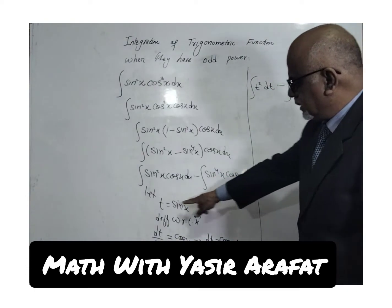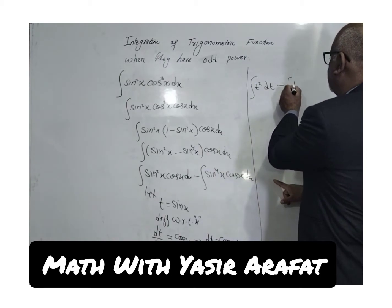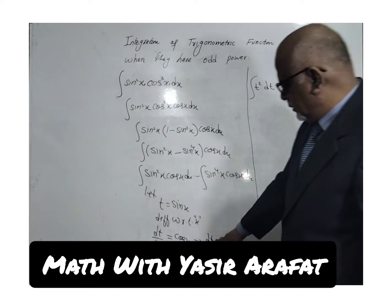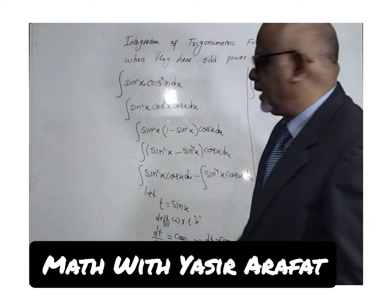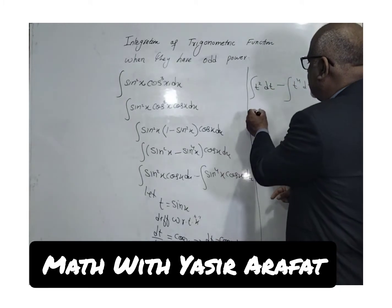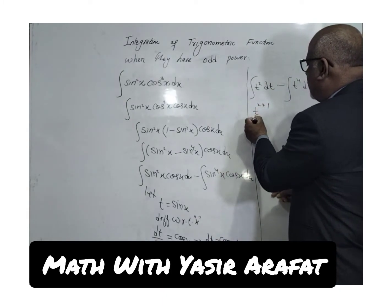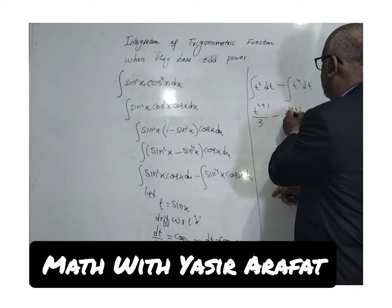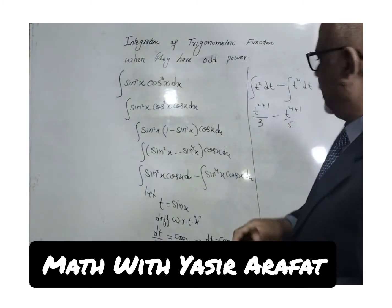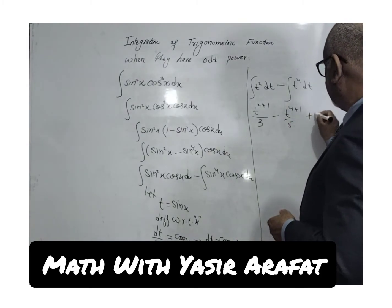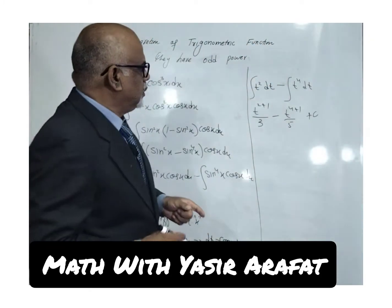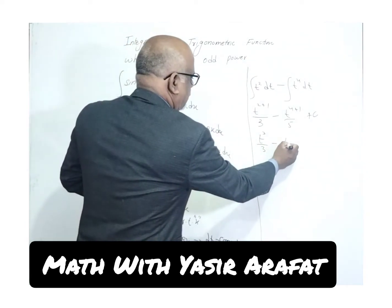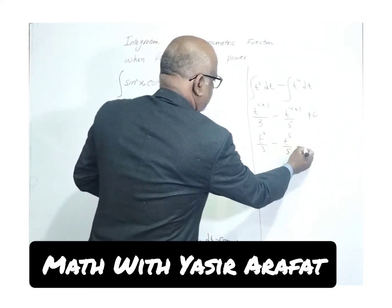Integrating with respect to t: for t², we add 1 to the power to get t³/3. For t⁴, we get t⁵/5. So the result is t³/3 - t⁵/5 + c.